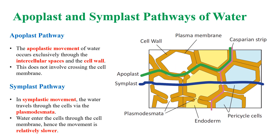Water absorbed by the root hairs can move deeper into root layers by the apoplast and symplast pathways. In the apoplast pathway, water moves through intercellular spaces and the cell wall without crossing the cell membrane. Whereas in the symplastic pathway, water moves through the cells via plasmodesmata.